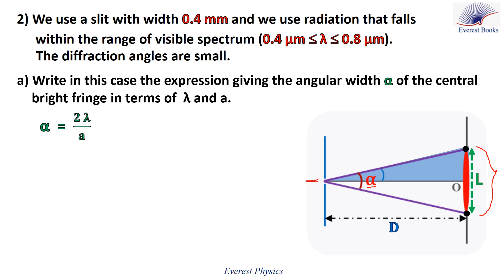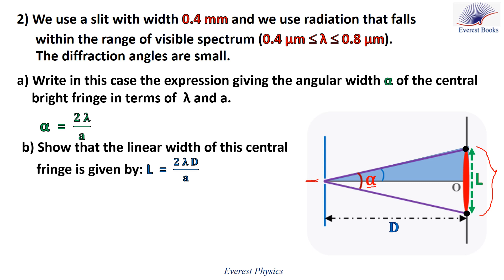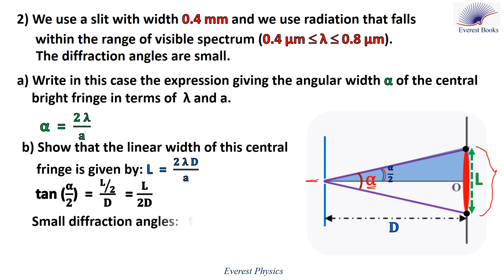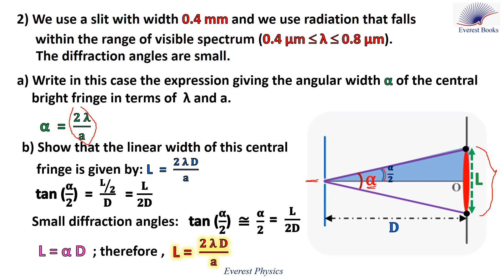We can write directly alpha equals 2 lambda over a. Now for part b, show that the linear width of the central fringe is given by l equals 2 lambda d over a. Looking at the figure, if the full angle is alpha, then each half-angle is alpha over 2. Considering the right-angled triangle: tangent(alpha/2) equals (l/2) divided by d, which equals l over 2d. Since diffraction angles are small, tangent(alpha/2) can be replaced by alpha/2, giving l equals alpha times d. Replacing alpha by 2 lambda over a gives l equals 2 lambda d over a.